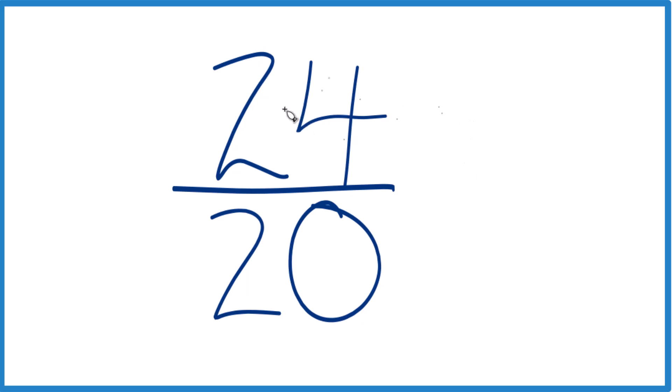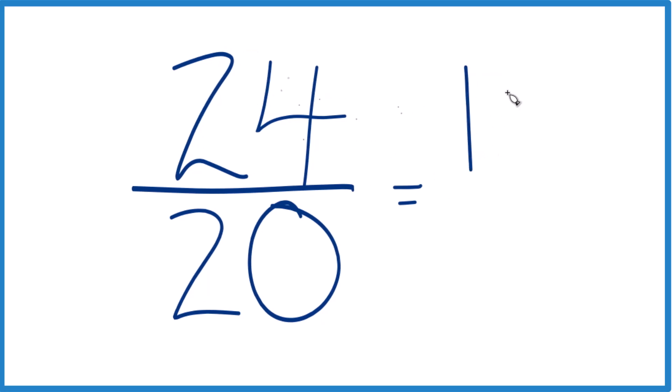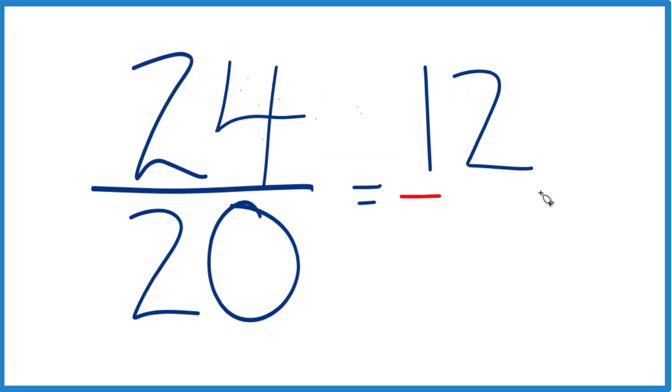So it looks like, why don't we do this? These are both even numbers. Let's just divide both by 2. 24 divided by 2 is 12. 20 divided by 2 is 10.